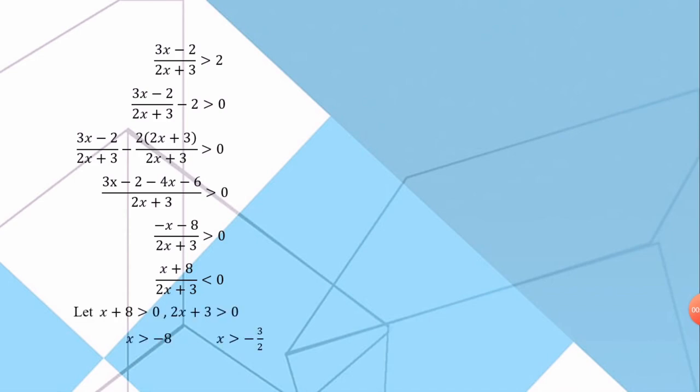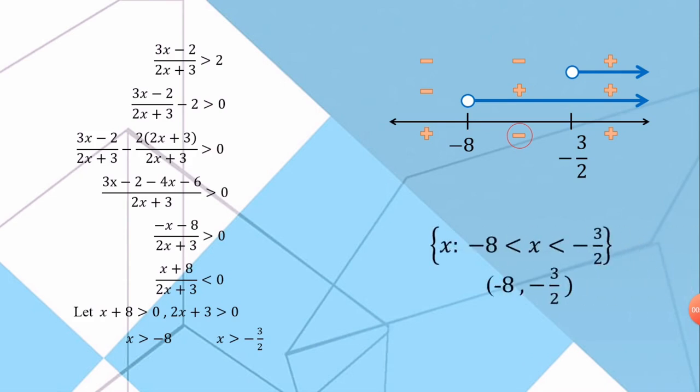As for the fourth step, we always need to make a positive assumption to make our solution much more easier. As you can see, we have written a positive sign over the lines in the number line. Whereas, we have written a negative symbol on the number line where the lines cannot be found.